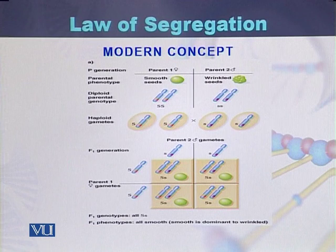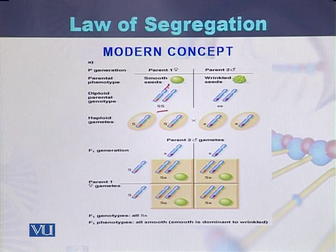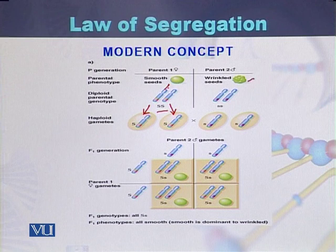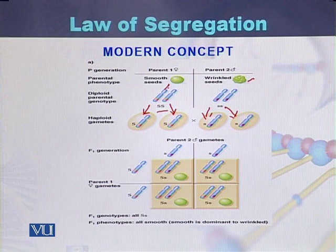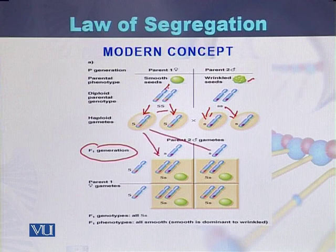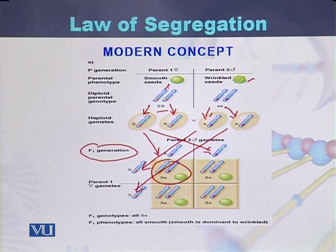Based on the modern concept of the law of segregation, smooth seeds have two alleles — capital S and capital S. During gametogenesis, both alleles separate from each other in parent one. Similarly in parent two, where seeds are wrinkled in shape, their gametes separate as small s and small s. The genes are present on chromosomes. When they unite during F1 generation, capital S and the second capital S chromosomes unite with each other during the process of fertilization.